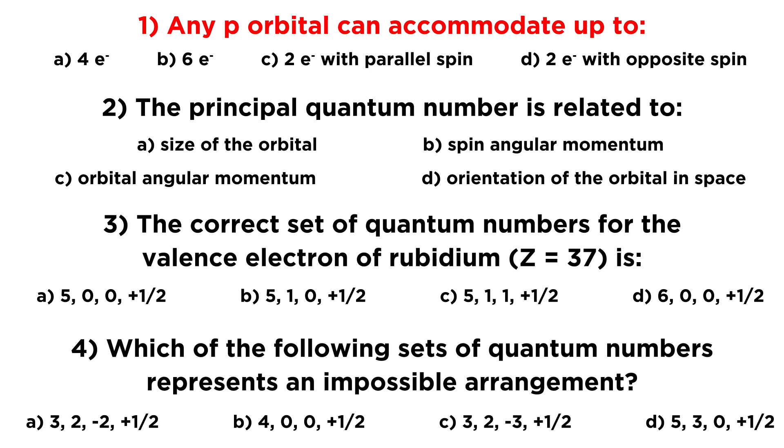So looking at this first question, any p-orbital can accommodate up to, and we want to find a number of electrons. It doesn't really matter that we're looking at a p-orbital, because any orbital, be it atomic orbital or even a molecular orbital, can accommodate two electrons, and those two electrons must have opposite spin. By virtue of the Pauli exclusion principle, we know that no two electrons within an atom can have the same set of quantum numbers. So if they are in the same orbital, they have the same n, they have the same l, they have the same m sub l, so they must have the opposite value for m sub s, so that they don't have the same set of quantum numbers, so that one is going to be d.